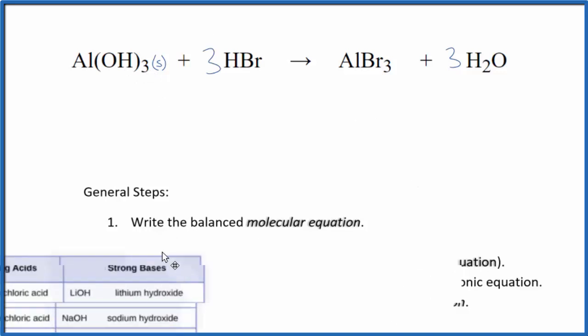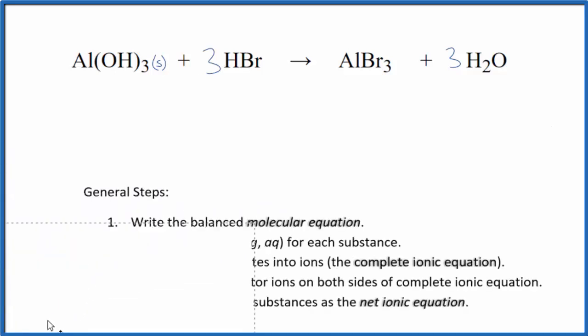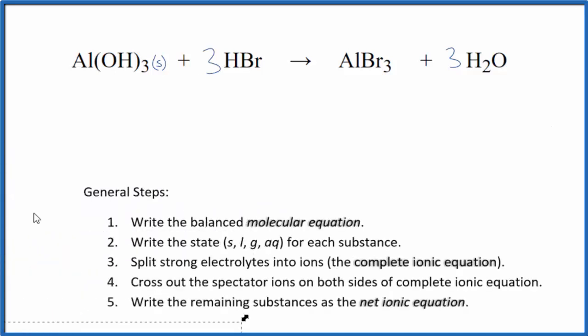Hydrobromic acid, that is a strong acid. We can look at this table here and see HBr, hydrobromic acid, that's a strong acid so it's going to break apart, dissociate completely into its ions. So because of that we're just going to write AQ after that. Aqueous, it's going to be a strong electrolyte.